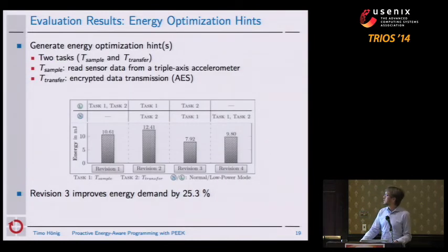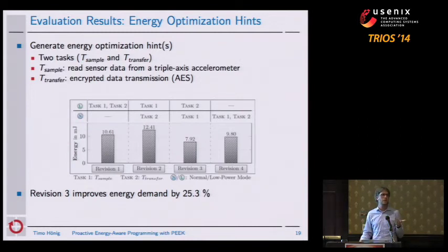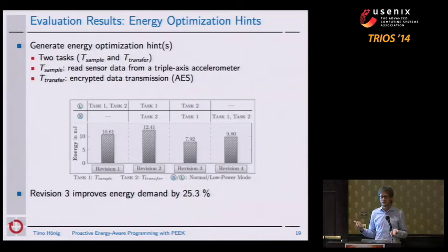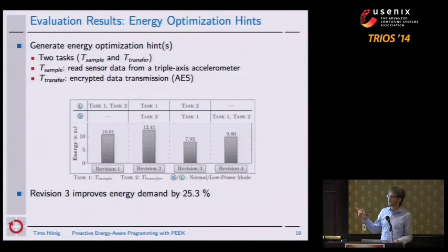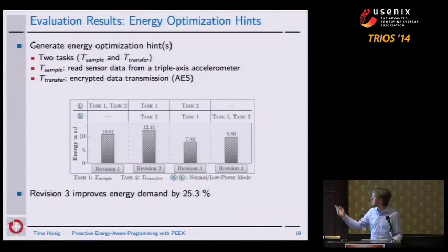For the third evaluation result, we look at our energy optimization hints. We had an application split between two tasks: one was sampling data from a triple-axis accelerometer, and a second task did computation on that data — namely AES encryption — and then sent the data using a wireless radio. The first revision provided by the developer was using low power mode for both tasks. We then used our back-end to automatically switch the available power modes on the platform for the different tasks to see the impact on the overall energy demand. We extracted one optimization — revision number three — which improves energy demand by 25% simply by running the first task in normal power mode and the second task in low power mode.